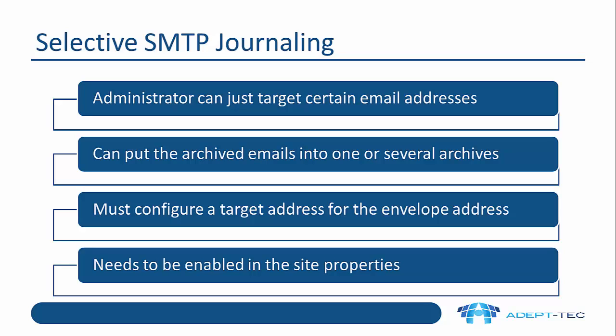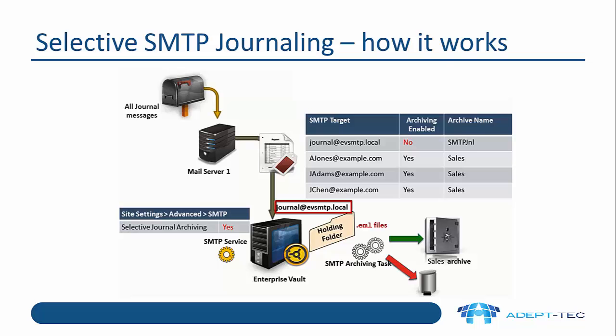You also need to enable selective SMTP journaling in the site properties; by default this is on. In this example, all email messages come out of Microsoft Exchange and are sent via a connector to the Enterprise Vault server, all sent to the journal address journal@evsmtp.local. Those messages are received in the holding folder as normal, but the SMTP target journal@evsmtp.local does not have archiving enabled — the target exists but archiving is switched off. We then have SMTP targets for three users, and for each of those targets the emails are archived into the sales archive.